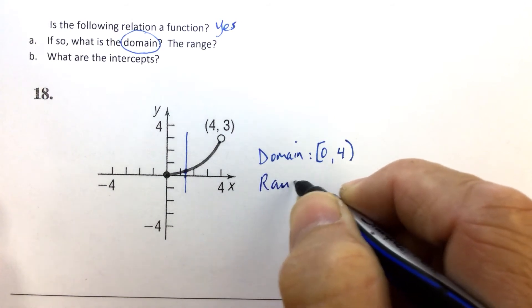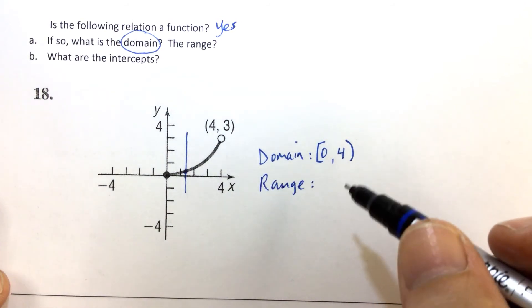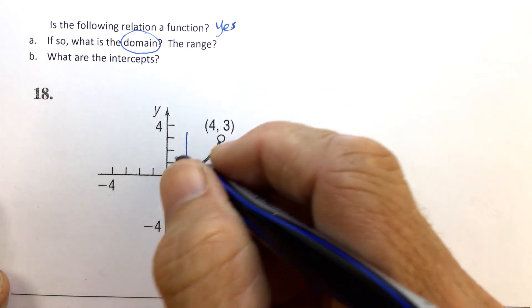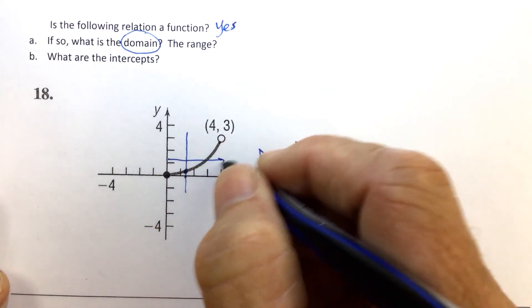Likewise, the range values are all the values of y that we use to graph the function. The lowest y-value—going from bottom to top—for domain, we went left to right.